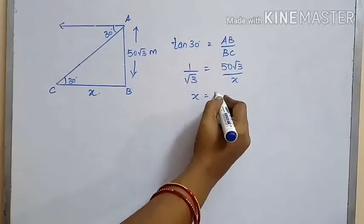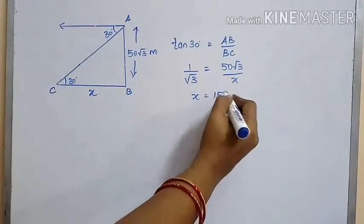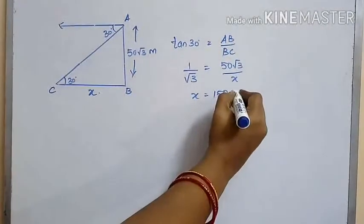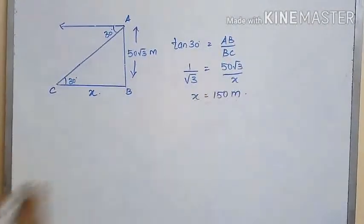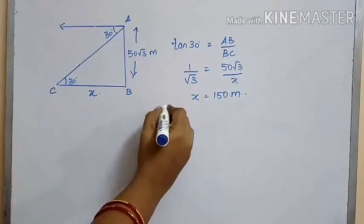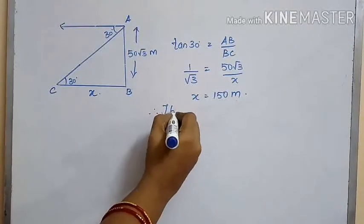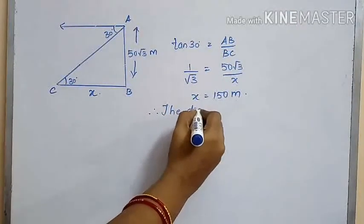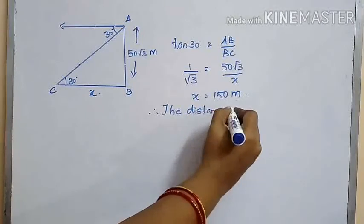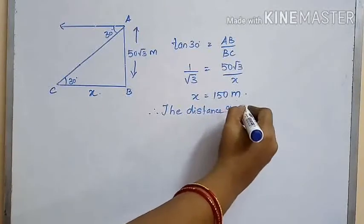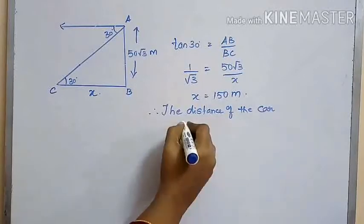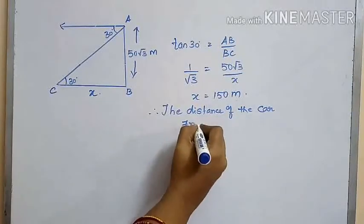Therefore, x is equal to 50√3 × √3, which is 50 × 3, so x = 150 meters. Therefore, the distance of the car from the rock is 150 meters.